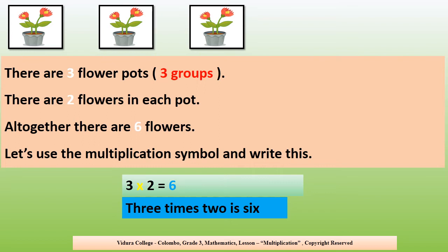First we write the number of groups. Then the multiplication symbol. Then the number of flowers in each pot. Then the equal mark. Then the answer. We can read it as 3 times 2 is 6.